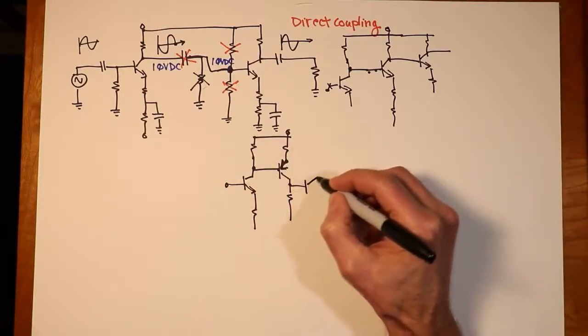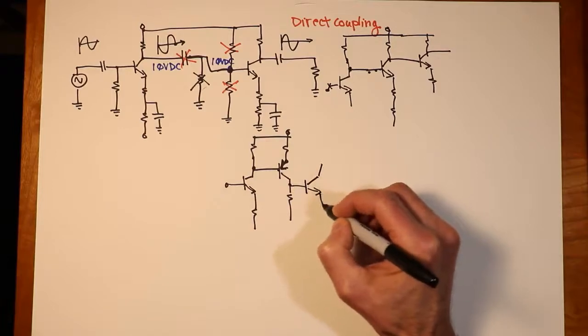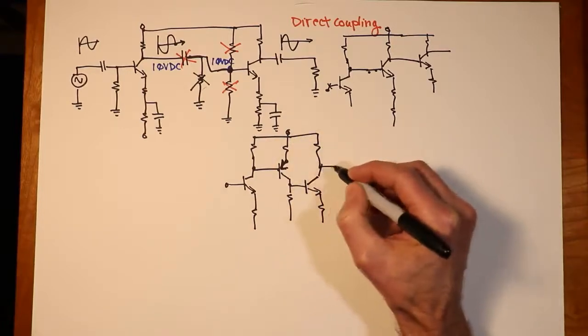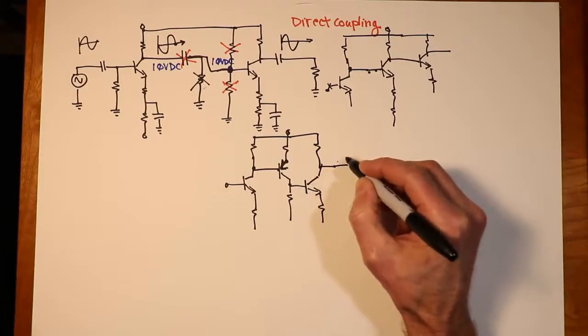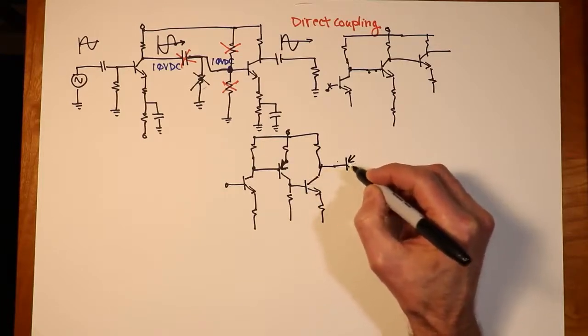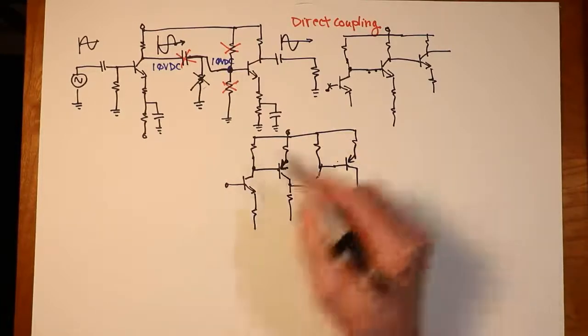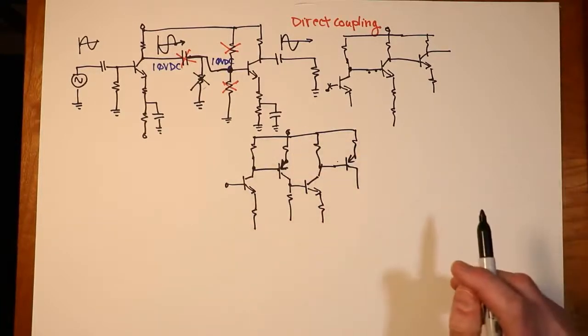So the next stage over here would be, if we were going to do this, it would be another NPN. And if we were to just continue this idea ad infinitum, we would just keep doing this back and forth. So it goes up, down, up, down, up, down, and off we go.